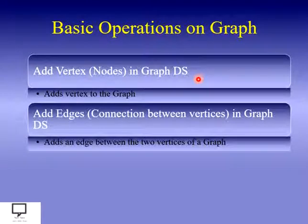They are helpful to build connections between two different vertices. In this way, we can add the edges. These two basic operations are mandatory operations, because without these two operations, we can't build a graph. And after that, after building or constructing a graph, we have to traverse the graph.